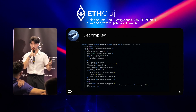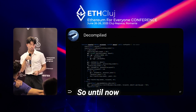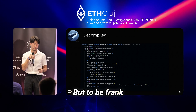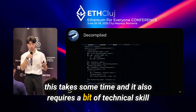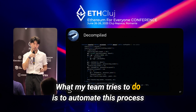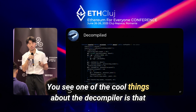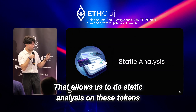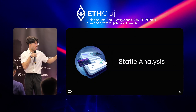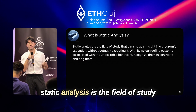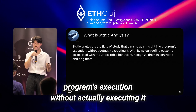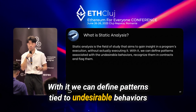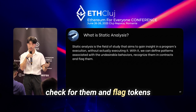Blacklists, owners, taxes — everything. Until now we've gone over some ways to ensure the safety of a token you're about to trade, but to be frank this takes time and requires technical skill. What my team tries to do is automate this process. One of the cool things about the decompiler is that it gives us access to its results programmatically, which allows us to do static analysis on these tokens. Static analysis is the field of study that tries to gain insight into a program's execution without actually executing it. With it, we can define patterns tied to undesirable behaviors, check for them, and flag tokens.